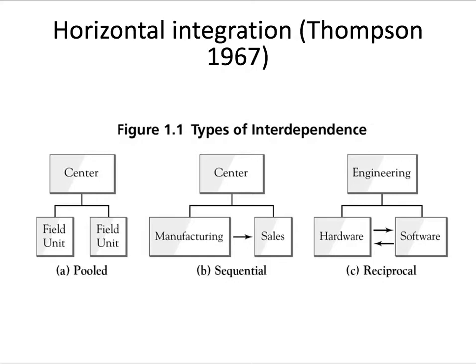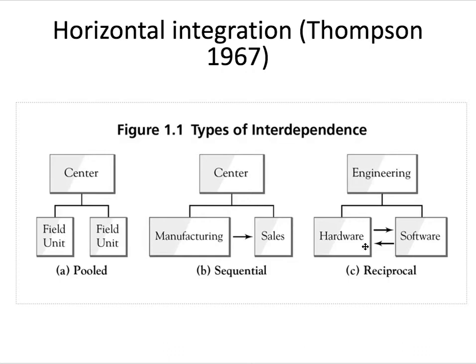So we have the question of vertical differentiation — how to departmentalise — and then the question of horizontal integration: how are the vertical divisions supposed to relate to each other? In 1967, Thompson talked about this in terms of pooled integration, where one unit pools activities but works independently from others; sequential interdependence, where one department does something and hands the work on; or reciprocal interdependence, where departments continuously give and take products and services from each other.